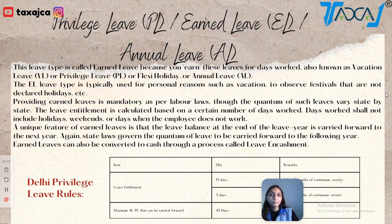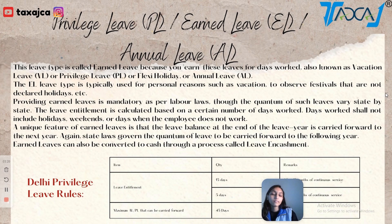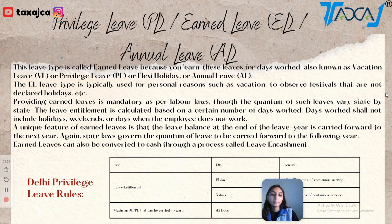First, let's talk about Privileged Leave, which we call Earned Leave or Annual Leave. We call it Earned Leave because we get it according to how many days we have worked. If you are in a company and have given 4 months of continuous service, then you become eligible to get 5 days of Annual Leave. These Annual Leaves can also be carried forward.